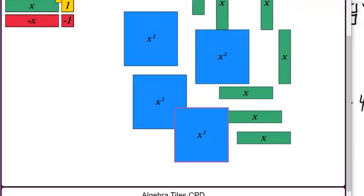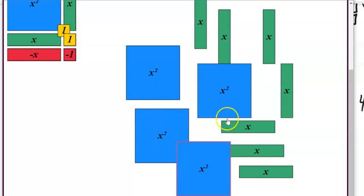You could have something like this. Notice I have 4x squareds, 1, 2, 3, 4, 5, 6, 7, 7x's. And again, the direction that those x's are laid down right now is arbitrary. We don't care how those get laid down.